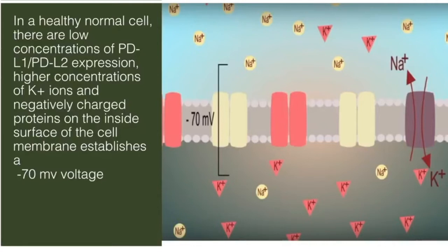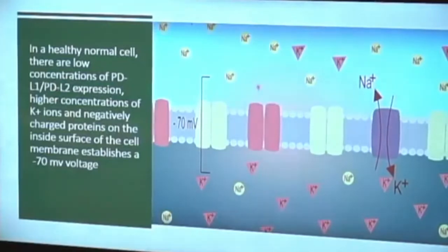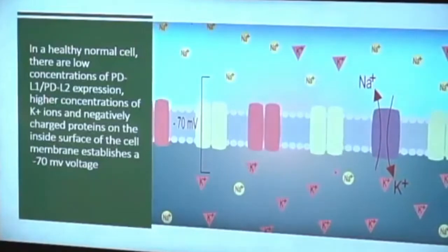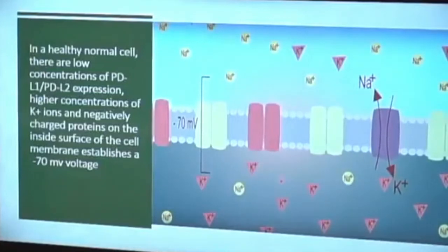In a healthy normal cell, you can see this minus 70 millivolt charge, which means there are more negative charges on the inside than on the outside. Potassium is primarily on the inside and sodium is on the outside. These leak channel proteins — some are voltage-gated — allow sodium and potassium to pass across depending on the action potential of the normal cell.